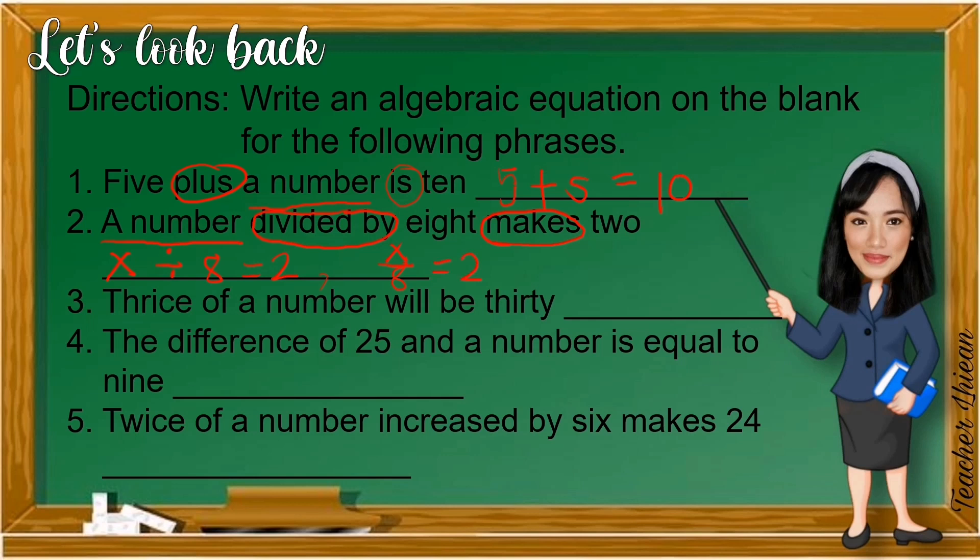Number 3, thrice of a number will be 30. A number then thrice meaning 3 will be pertaining to equal. Thrice of a number - this is multiplication. So, 3Y is equal to 30.